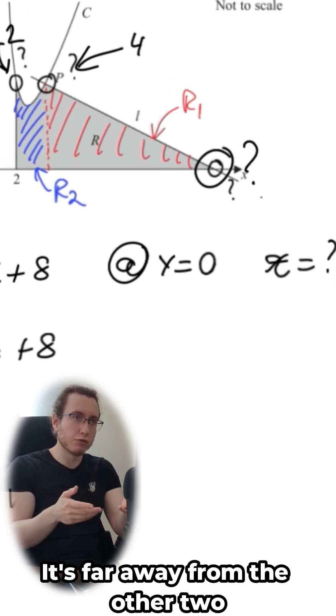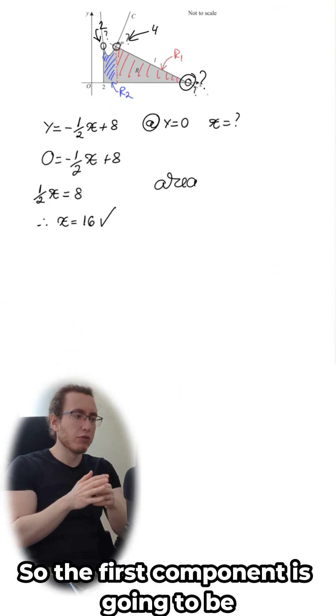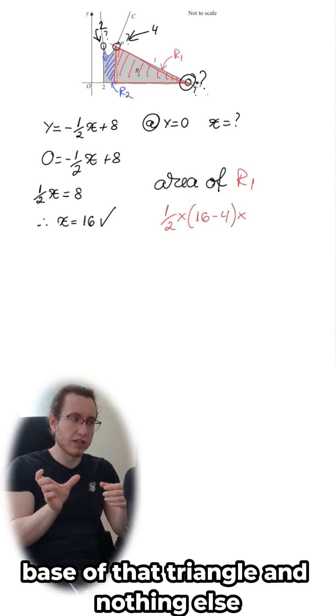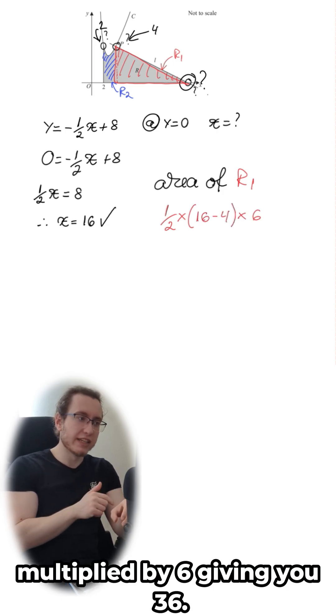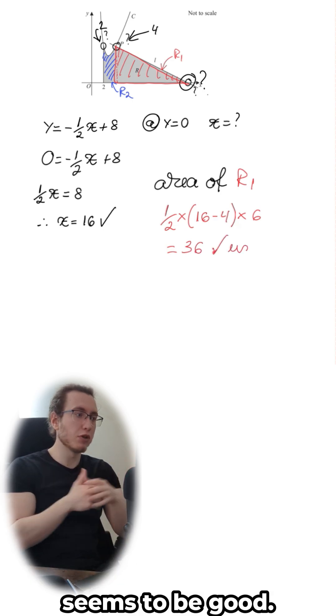So the first component is going to be R1 is equal to half times 16 minus 4, only the base of that triangle and nothing else, multiplied by 6, giving you 36. Not bad so far. This value is less than 46, so seems to be good.